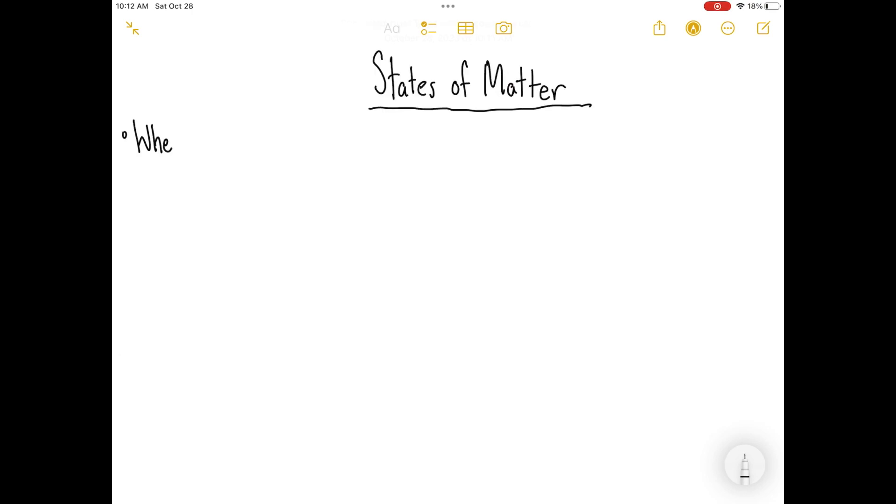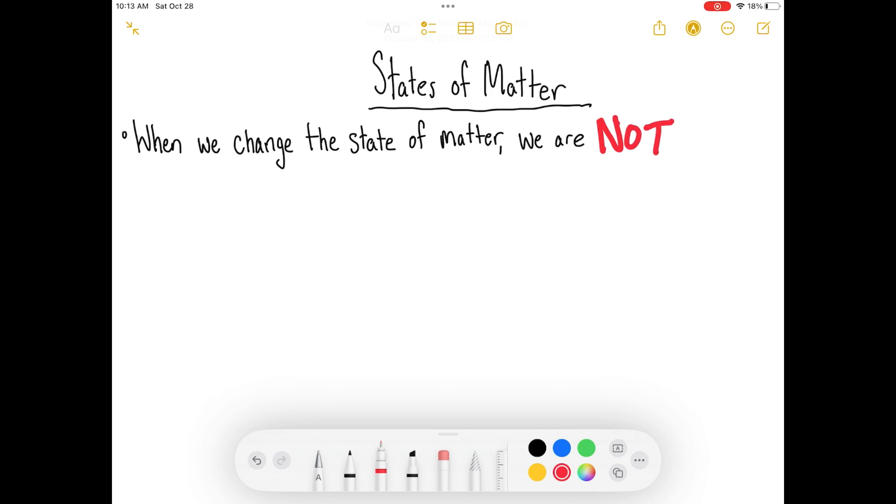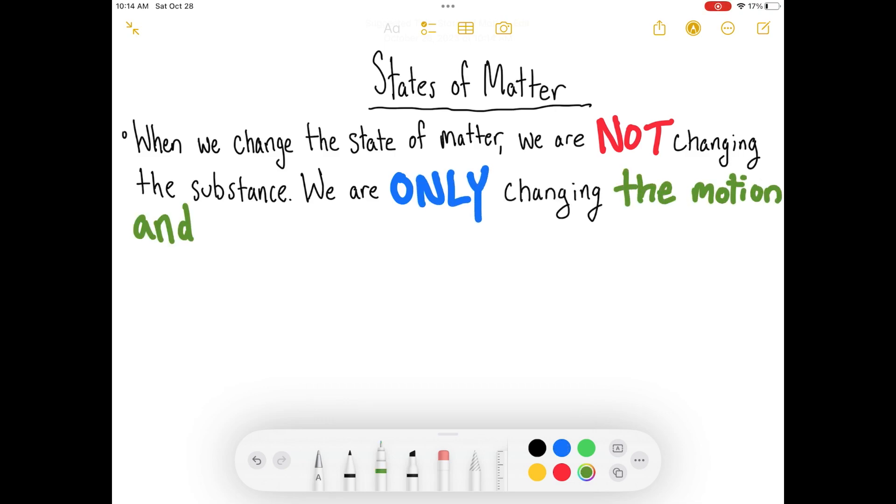The states of matter is a big physical property. The reason why it's considered a physical property is because we are not changing the substance itself. We are only changing the rate at which the atoms or molecules in the pure substance moves. Just because a pure substance is a solid in one form and then becomes a liquid or a gas in another form, that doesn't mean that it's not the same pure substance. It's just that in a solid, liquid, or gas form.